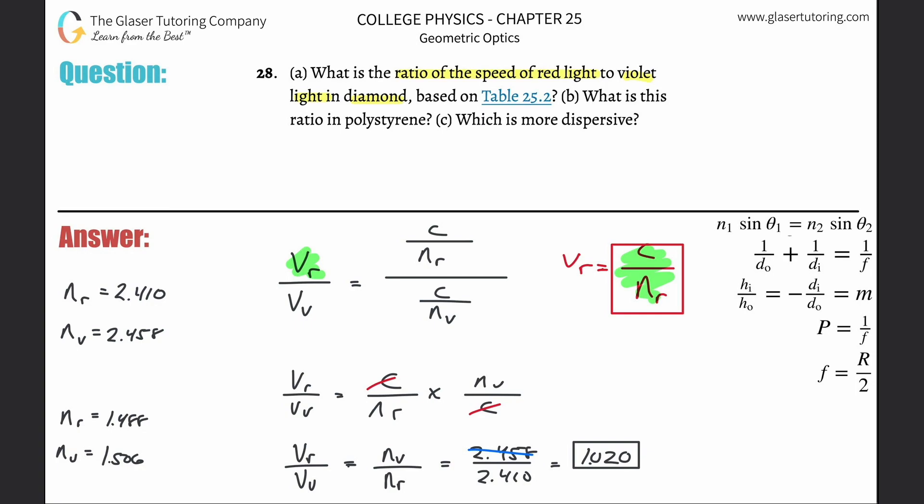Now it's 1.506. So this now becomes 1.506. And then the bottom number becomes 1.488. Do that calculation now 1.506 divided by 1.488. And this comes out to be 1.012. So that's the ratio.